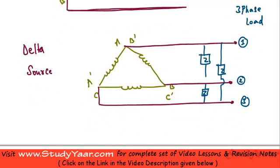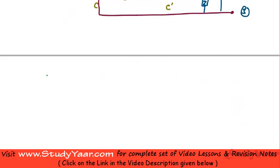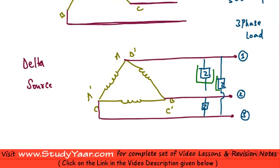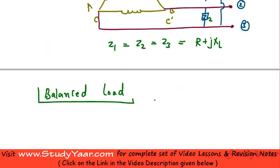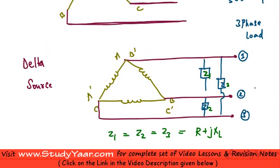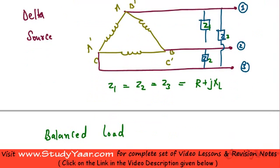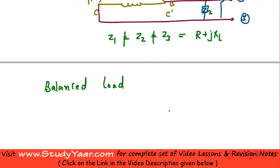Now let's look at certain terminologies used in a three-phase system. First, we are going to understand what a balanced load system is. When we say we have a balanced load, we basically mean that the impedances connected across my lines are all equal. So if Z1 equals Z2 equals Z3, equal to some impedance R plus jXL, then we have a balanced load. If they are not equal, then we have an unbalanced load.